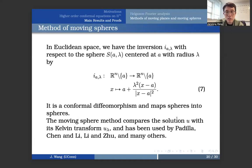And another key method that is used to prove the symmetry of solutions is this method of moving spheres. So let's first look at the Euclidean space case. We have the inversion, called i, with respect to the sphere centered at A with radius lambda by this transformation. It is actually a conformal diffeomorphism and maps spheres into spheres. More precisely, and also briefly, the moving sphere method compares the solution with its Kelvin transform U lambda. And it has been used by Padilla, Chen Li, Li and Zhu, and many others.